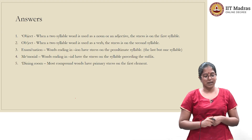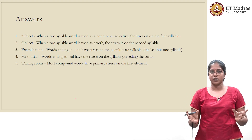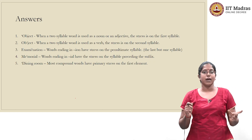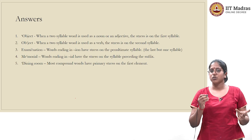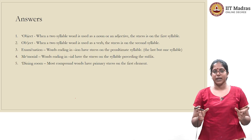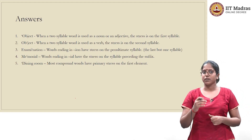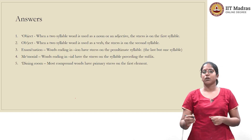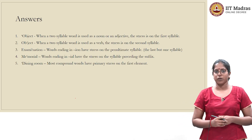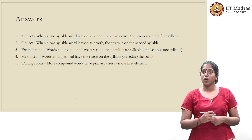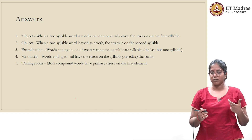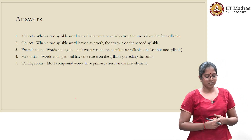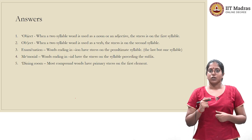Again, there are exceptions, but this rule applies to more than 80% of words in that class. For object as a verb, syllabify it as 'ob' and 'ject' — the second syllable gets stressed, meaning the 'j' sound is stressed. So you pronounce it 'obJECT'. How is that different from the noun? The noun is 'OBject' and the verb is 'obJECT'.